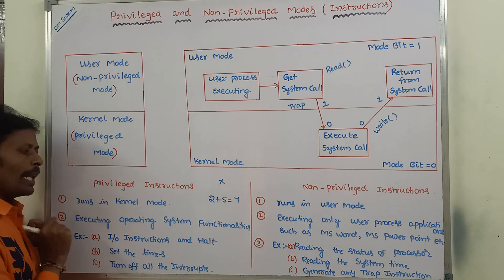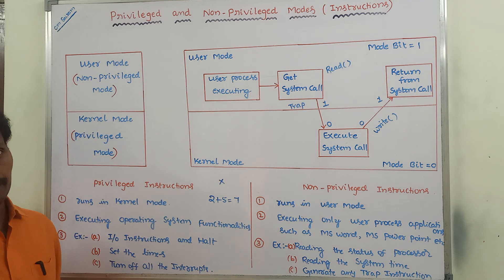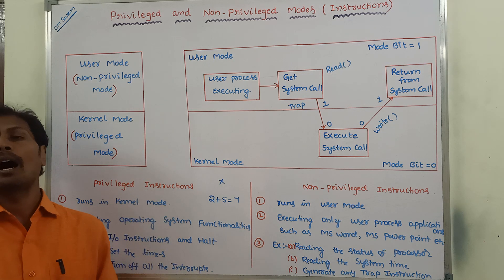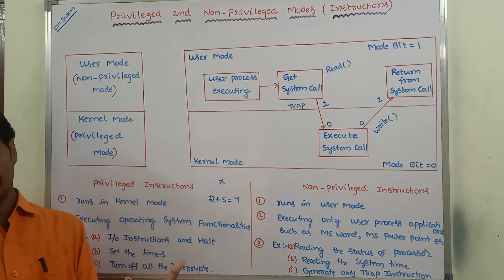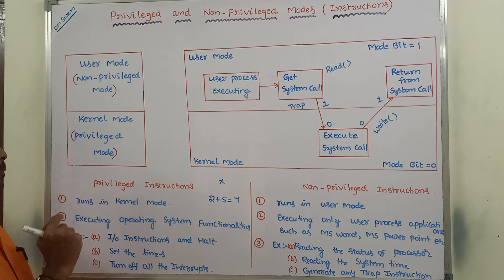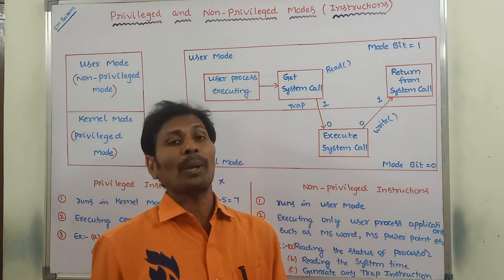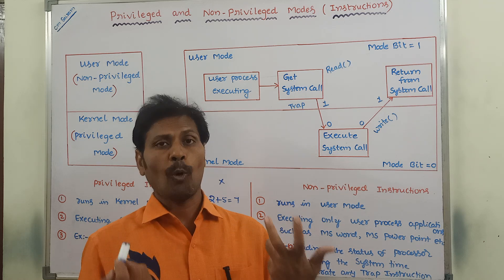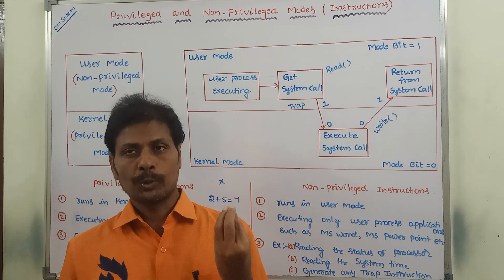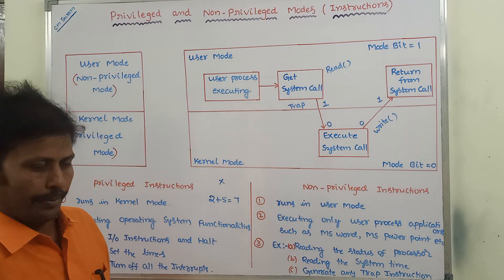In the privileged mode, we are executing only operating system related programs such as accessing IO devices, accessing resources, and accessing memory. To execute those operating system related programs, we have to use privileged instructions. Whereas to execute user applications such as MS Word, MS PowerPoint, and MS Excel, these applications come under non-privileged instructions.